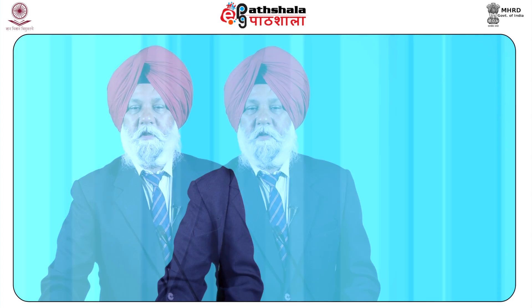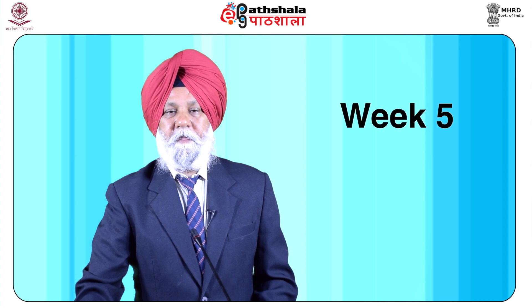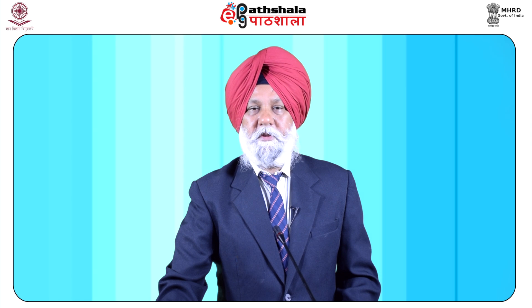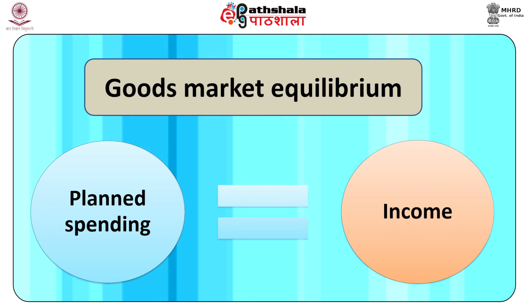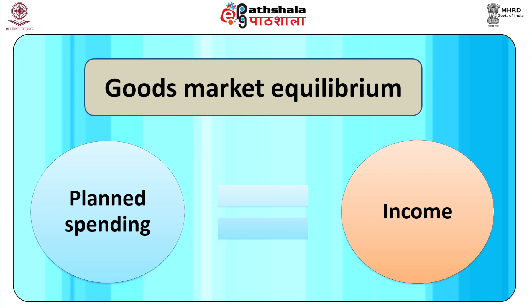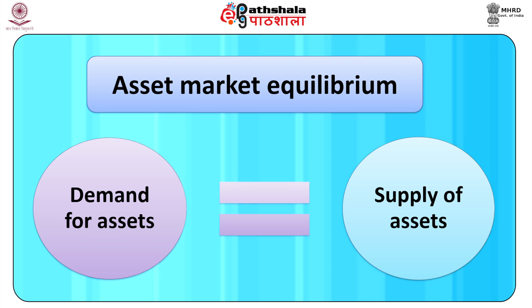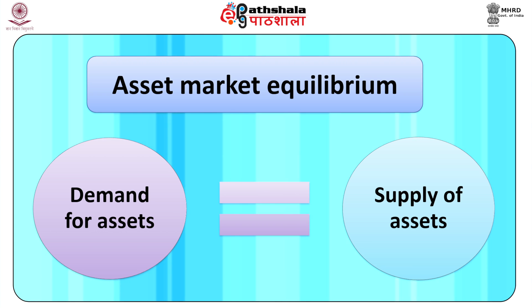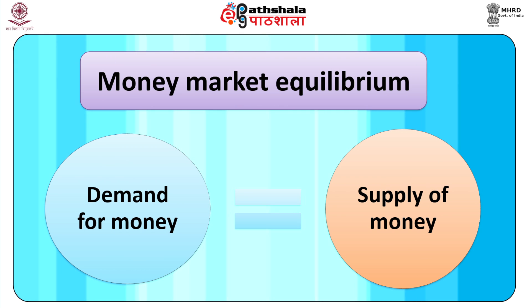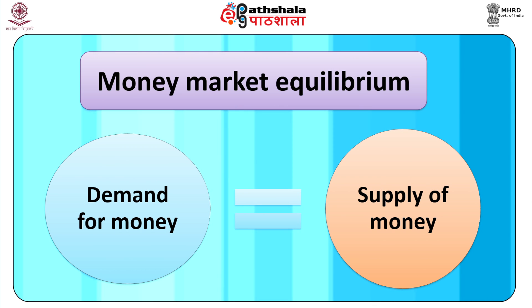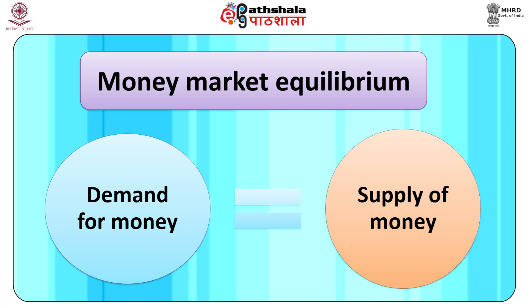The IS-LM theory shall form the basis of discussion in the fifth week. We will learn about the equilibrium in the goods market, the assets market and the money market. The goods market equilibrium is established where planned spending is equal to income. The asset market is in equilibrium when the demand for assets is equal to the supply of assets, and the money market equilibrium is established where the demand for money is equal to the given supply of money.